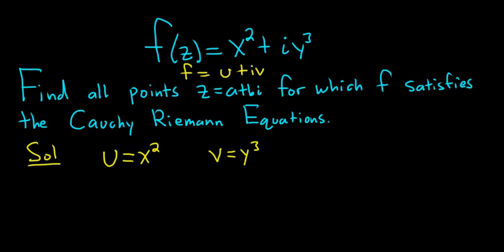So the Cauchy-Riemann equations say that we have to have the partial of u with respect to x equal to the partial of v with respect to y, and the partial of u with respect to y equal to the negative of the partial of v with respect to x. These are the Cauchy-Riemann equations.